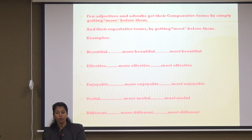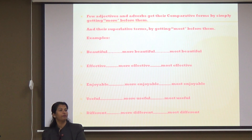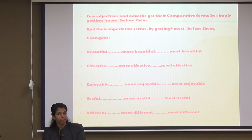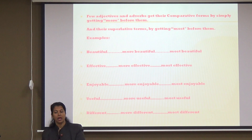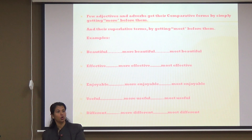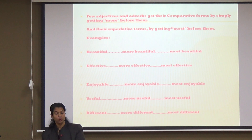Now, children, you need to understand that few adjectives and adverbs get their comparative form by simply adding 'more' before them, and the superlative terms by adding 'most' before them. For comparative 'more' and superlative 'most', the few examples are: positive degree — beautiful; comparative — more beautiful; superlative — most beautiful. Likewise: effective, more effective, most effective; enjoyable, more enjoyable, most enjoyable; useful, more useful, most useful; different, more different, most different.